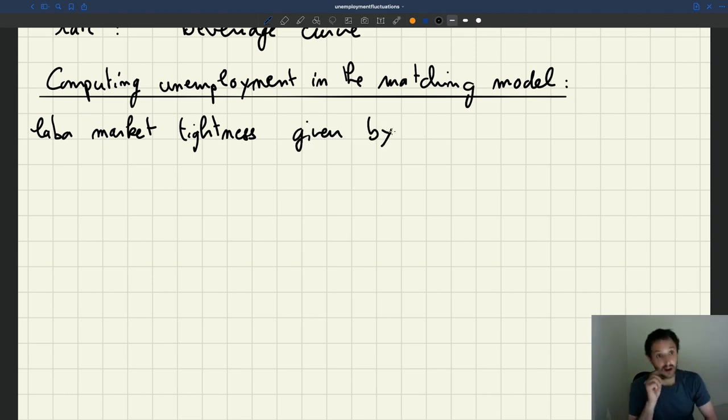So the tightness, in equilibrium once our model is logically consistent, we want the tightness to be such that labor supply is equal to labor demand. And if we had something different than that, then the model wouldn't be internally consistent, because people would expect something different than what actually happened.